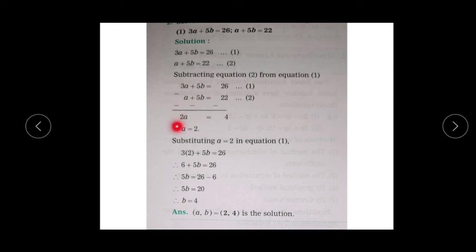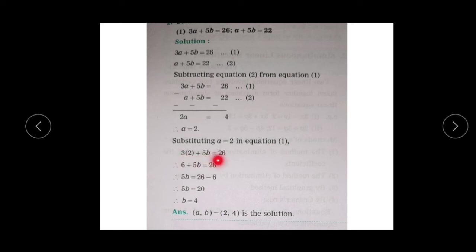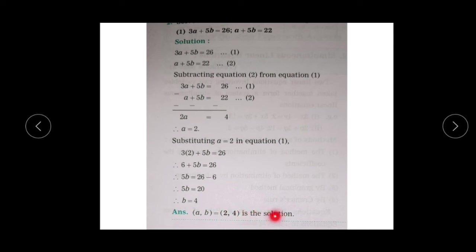Subtracting equation 2 from equation 1, change the signs of equation 2. The 5b terms cancel. You get 3a - a = 2a and 26 - 22 = 4, so a = 2. Substituting a = 2 in equation 1: 3(2) + 5b = 26, giving 6 + 5b = 26, so 5b = 20 and b = 4. Therefore, the solution is (a, b) = (2, 4).